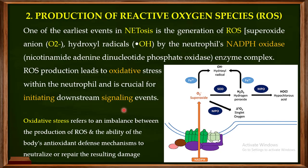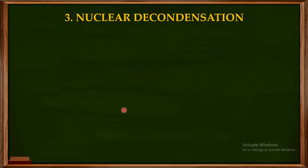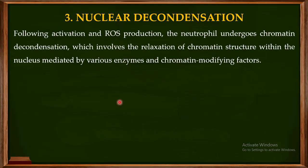The third step in NETosis is nuclear decondensation — the decondensation of the genetic material. Since one important component of NETs is chromatin, if the chromatin remains condensed it cannot be released into the extracellular matrix. So following neutrophil activation and ROS production, the neutrophil undergoes chromatin decondensation. This involves relaxation of the chromatin structure within the nucleus, mediated by a variety of enzymes and chromatin-modifying factors.